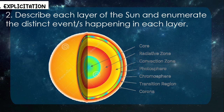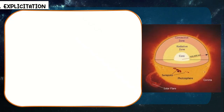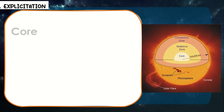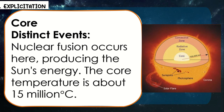Describe each layer of the sun and enumerate the distinct events happening in each layer. For the core — description: the sun's core is the innermost layer where nuclear fusion occurs. This is where hydrogen atoms fuse to form helium, releasing an immense amount of energy. Distinctive events: nuclear fusion occurs here, producing the sun's energy. The core temperature is about 15 million degrees Celsius.